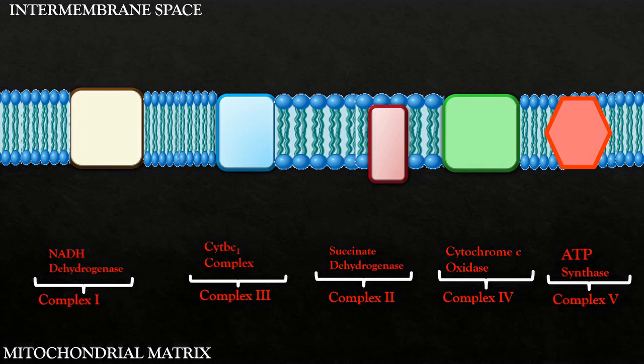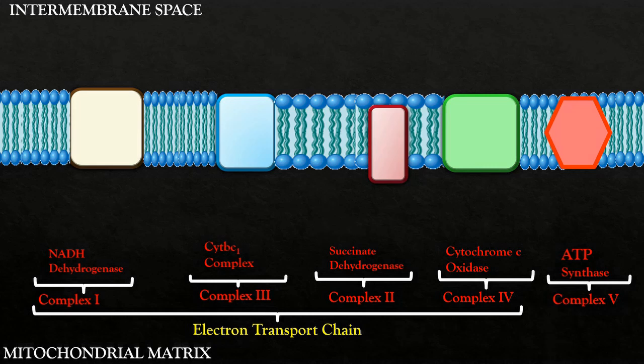The last of these complexes, complex 5, is known as ATP synthase. The complex part from 1 to 4 is known as electron transport chain because these complexes pump protons in the intermembrane space and shuffle electrons from one complex to the other. The ATP synthase that pumps down protons from intermembrane space back to the mitochondrial matrix is technically known as chemiosmosis.